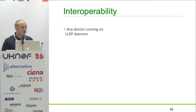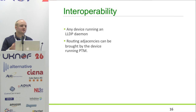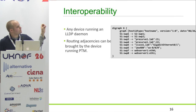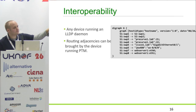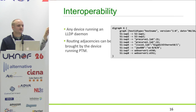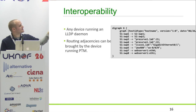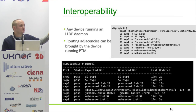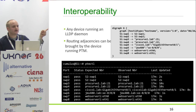One thing I keep getting asked is what about interoperability? It just uses LLDP, so the neighbor can be any device that talks LLDP — a Cisco box, Juniper, or Arista. Routing adjacencies can be managed by the device running PTM. In this example config we've got two switches with switch port 1 to switch port 1, switch port 2 to switch port 2, then switch ports 3 and 4 hooked up to a ProCurve, switch port 5 connected to a Cisco device, a Juniper MX480, and a normal Linux web server just running an LLDP daemon. Any device that can talk LLDP — you can use LLDP CTL to find the interface name and hostname and include that in the dot file.